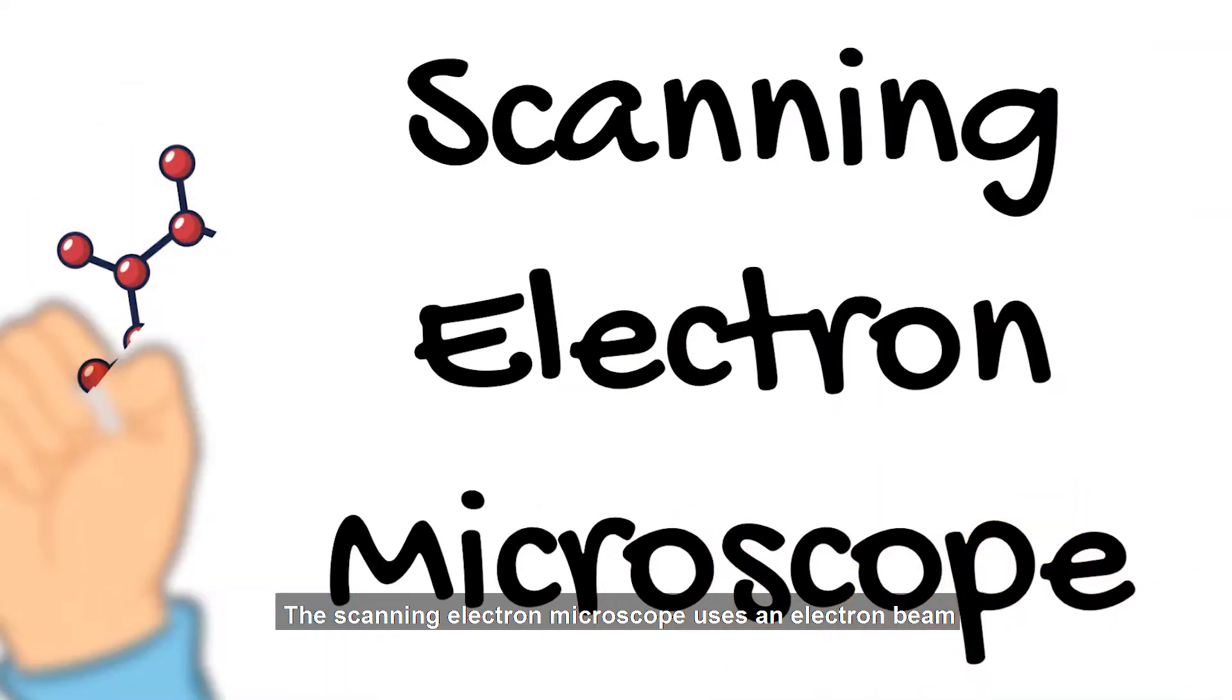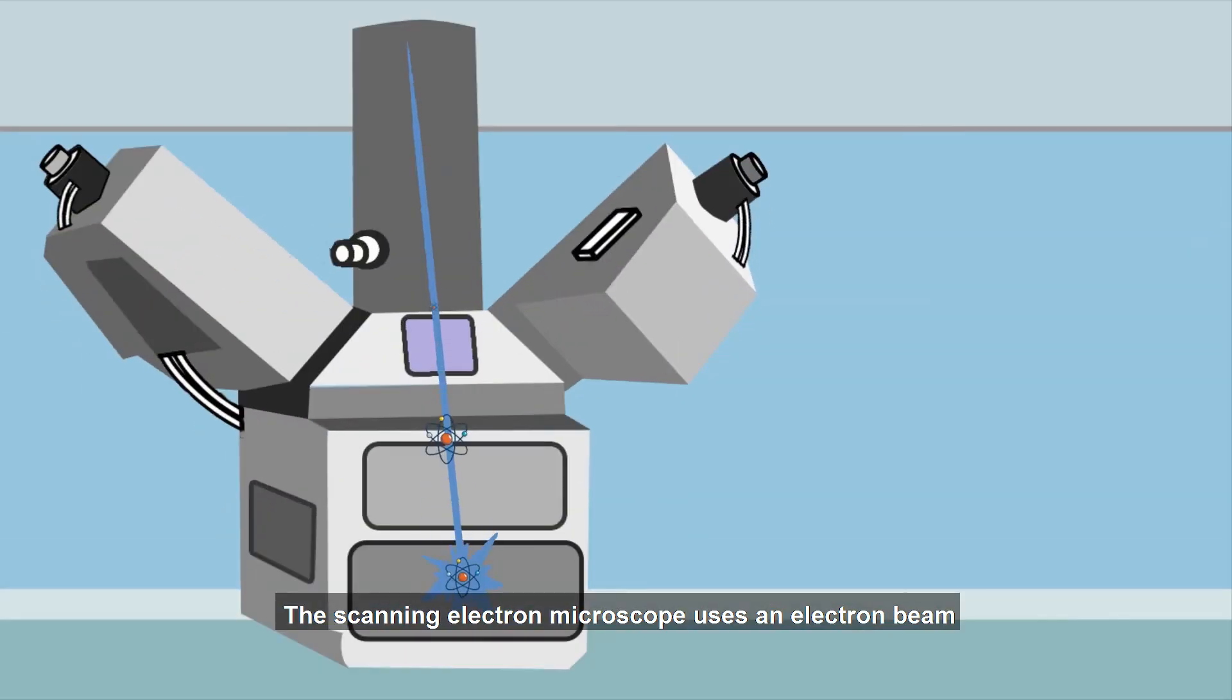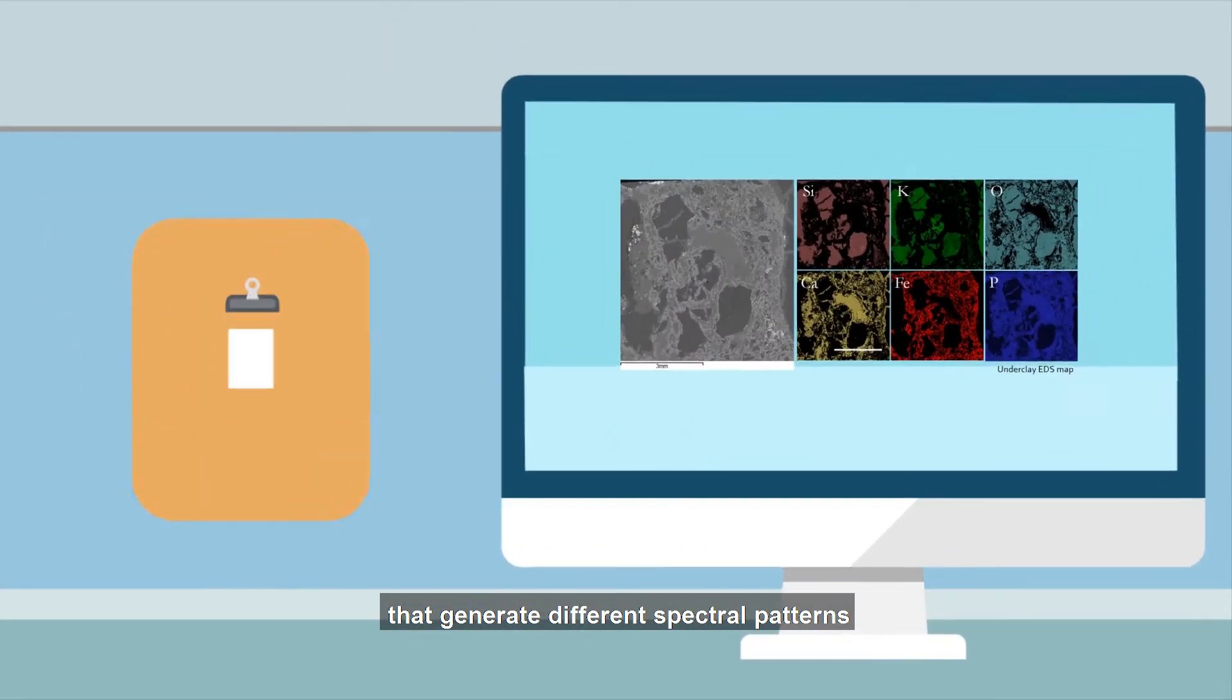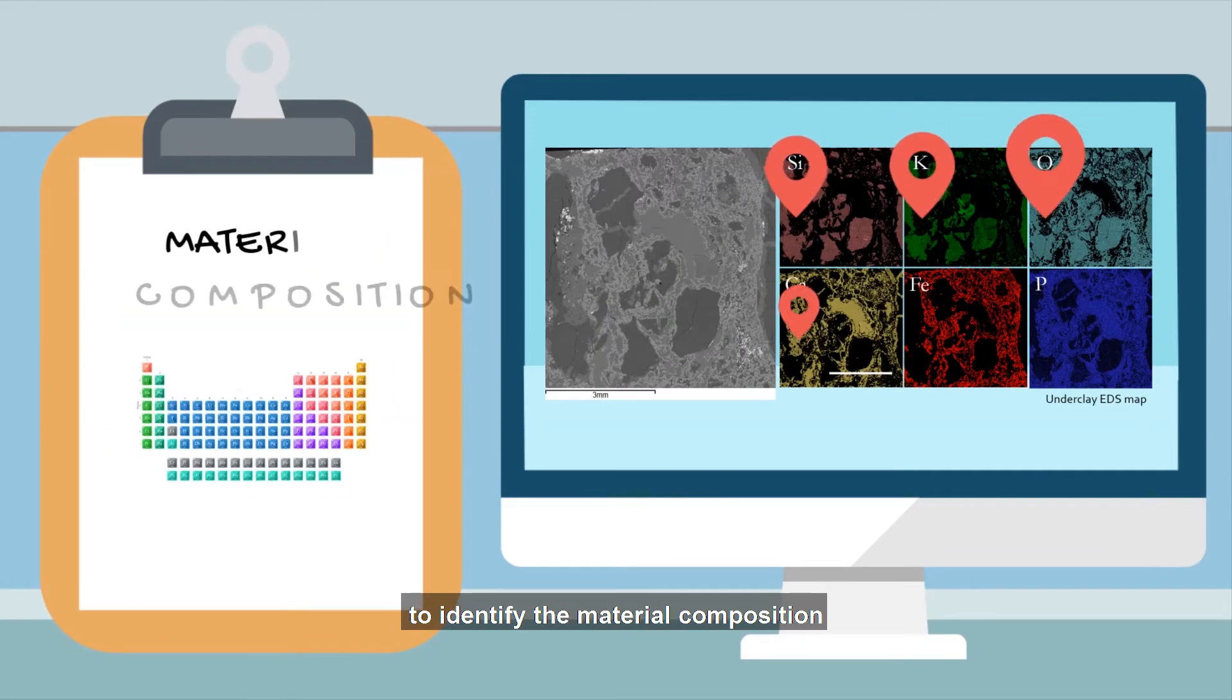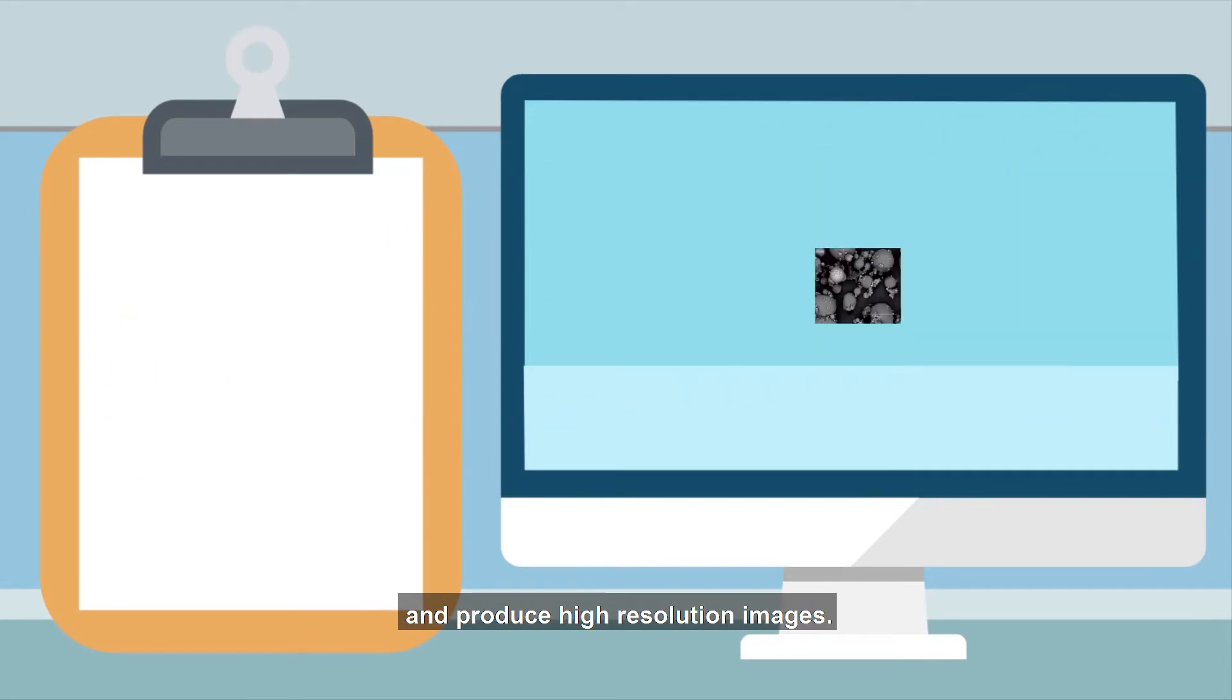The scanning electron microscope uses an electron beam that generates different spectral patterns to identify the material composition and produce high-resolution images.